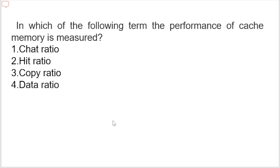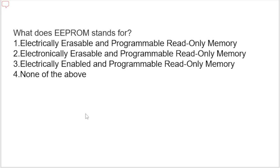In which of the following terms is the performance of cache memory measured? Options are: chat ratio, hit ratio, copy ratio, or data ratio. The correct option is hit ratio. The performance of cache memory is frequently measured in terms of a quantity called hit ratio. When the CPU refers to memory and finds the word in cache, it is said to produce a hit. The ratio of the number of hits divided by the total CPU references to memory (hit plus miss) is the hit ratio.